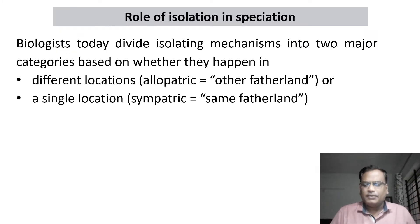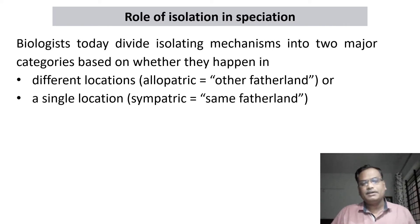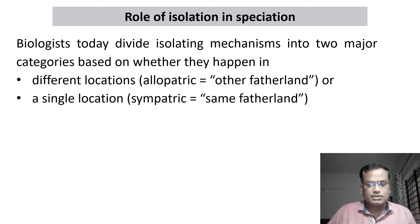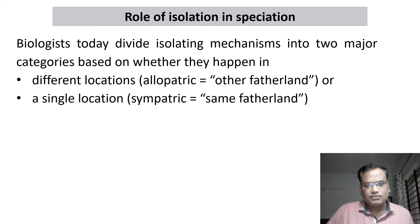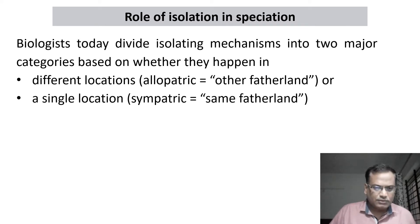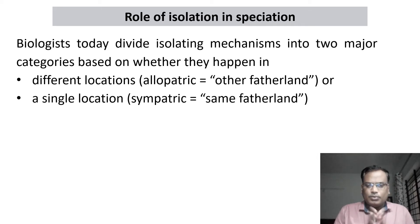The topic is the role of isolation in speciation. We already understood what speciation is and what the different isolating mechanisms are that lead to speciation. Biologists today divide isolating mechanisms into two major categories based on whether they happen in different locations or a single location. We already studied allopatric speciation and sympatric speciation.